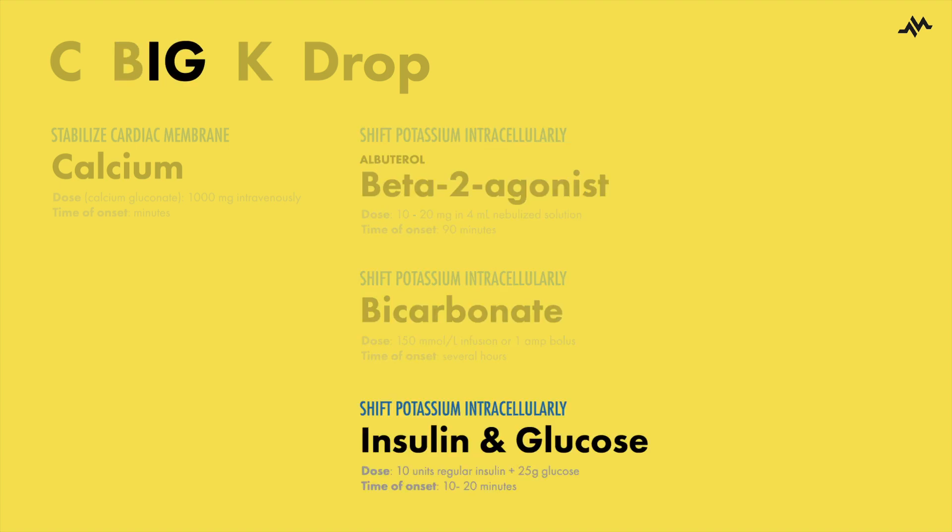The I and G stand for insulin and glucose, or clinically in some cases dextrose. Insulin also causes a shift of extracellular potassium intracellularly, with a relatively quick time of onset of 10-20 minutes, with effects lasting several hours.